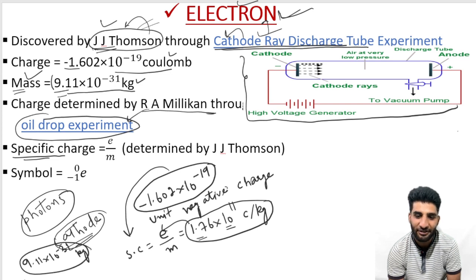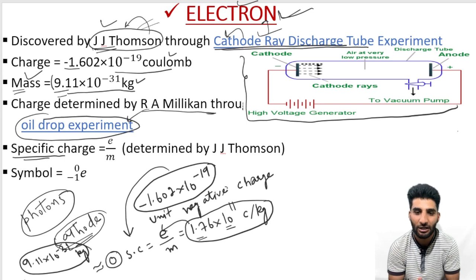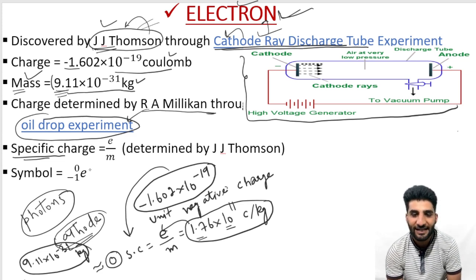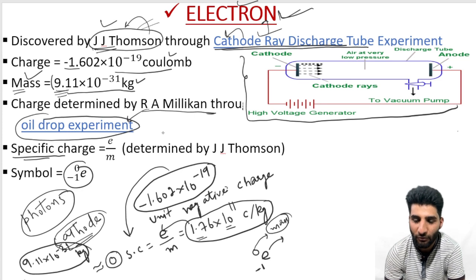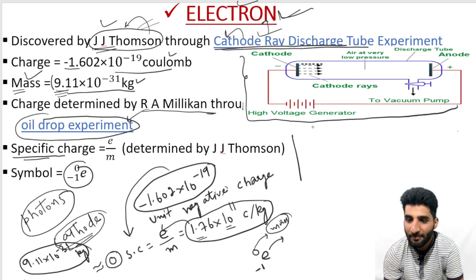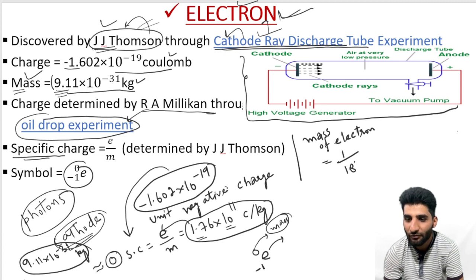This mass is negligible — approximately, we represent it as zero, meaning the electron does not have any significant mass. Although it has a little mass, it is a very small value, so we call it negligible mass. The electron is represented by the symbol E, with a superscript of minus 1 (representing its negative charge) and a subscript of 0 (representing its negligible mass). The mass of the electron is actually 1/1840th part of the mass of a hydrogen atom.